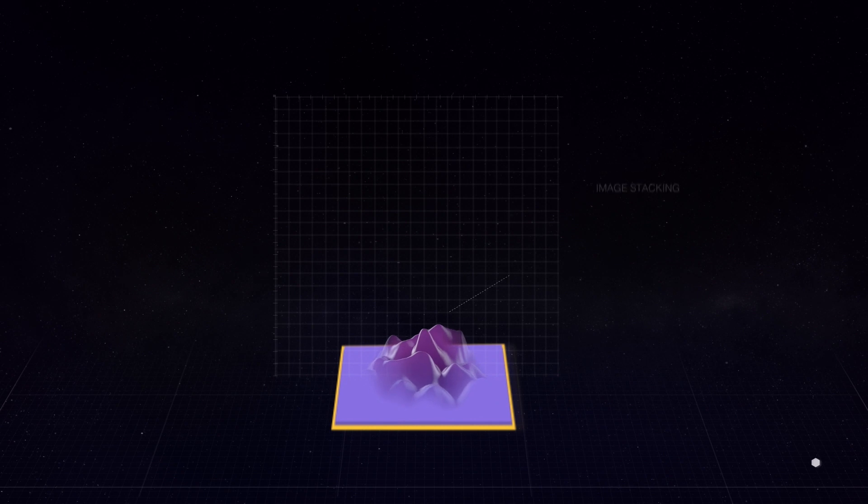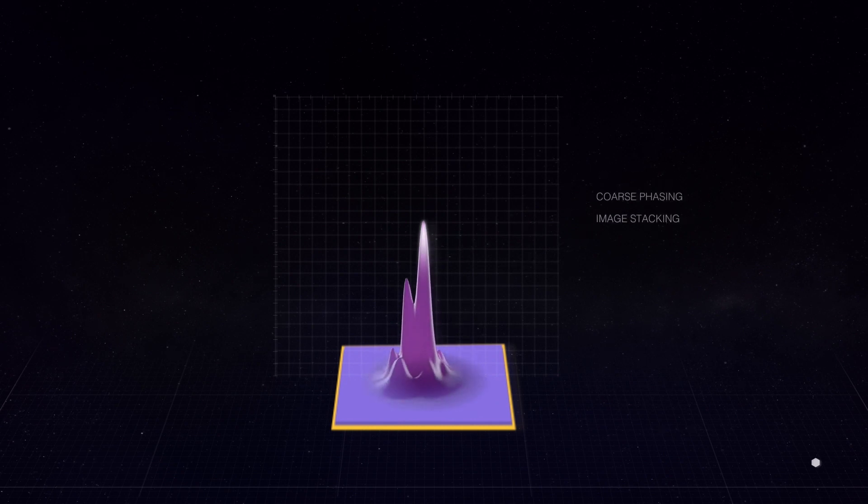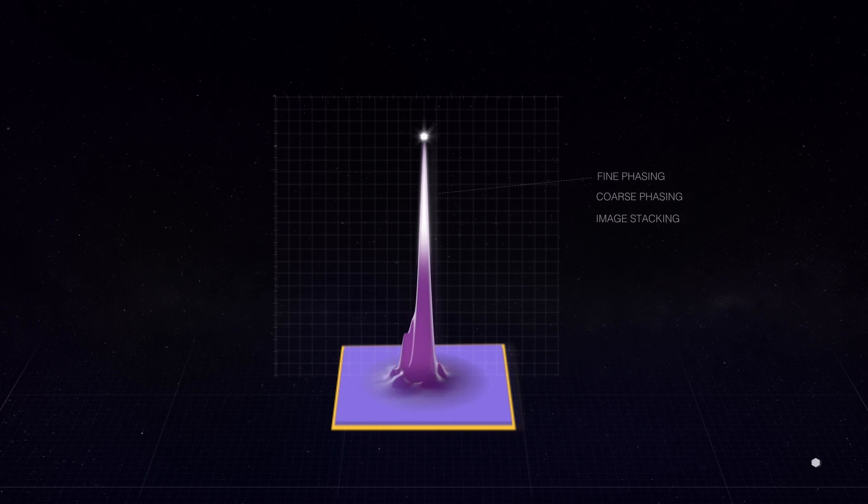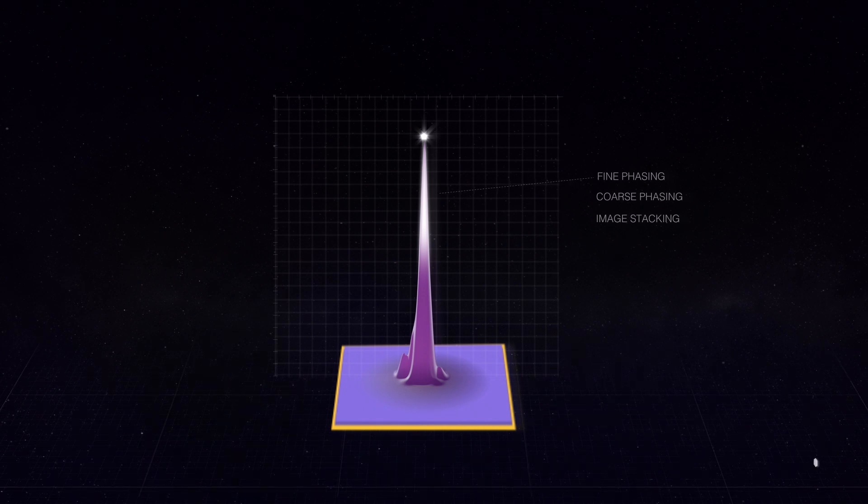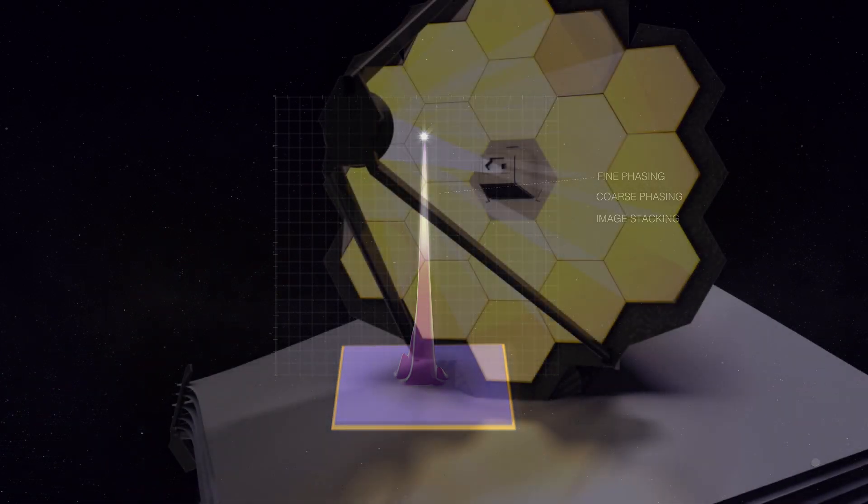Ultraviolet and visible light emitted by the very first luminous objects has been stretched or redshifted by the universe's continual expansion and arrives today as infrared light. Webb is designed to see this infrared light with unprecedented resolution and sensitivity.